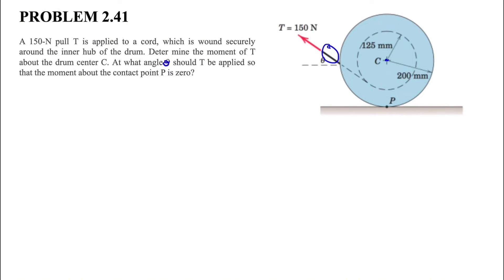In the second part we have to have T in a direction so that the moment about point P, which is where the drum is touching the horizontal surface, is zero. Let's start with the first part of the question.